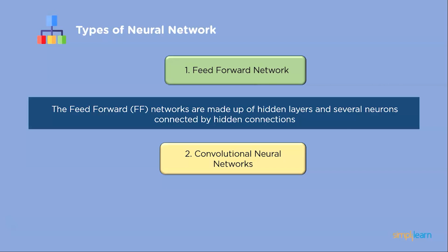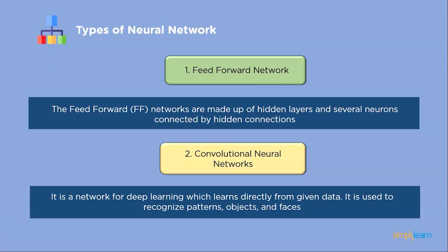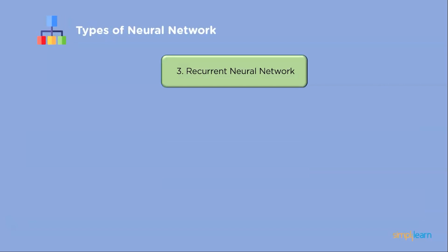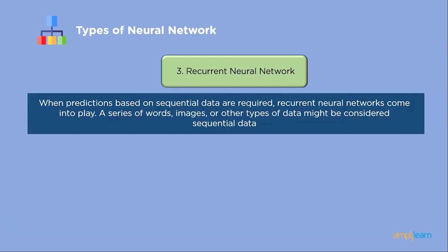Convolutional neural network is a deep learning neural network which learns directly from given data. It is used to recognize patterns, objects, and faces, and is the most popular network for image classification. Multiple convolutional layers of a CNN are in charge of extracting significant features from the image.